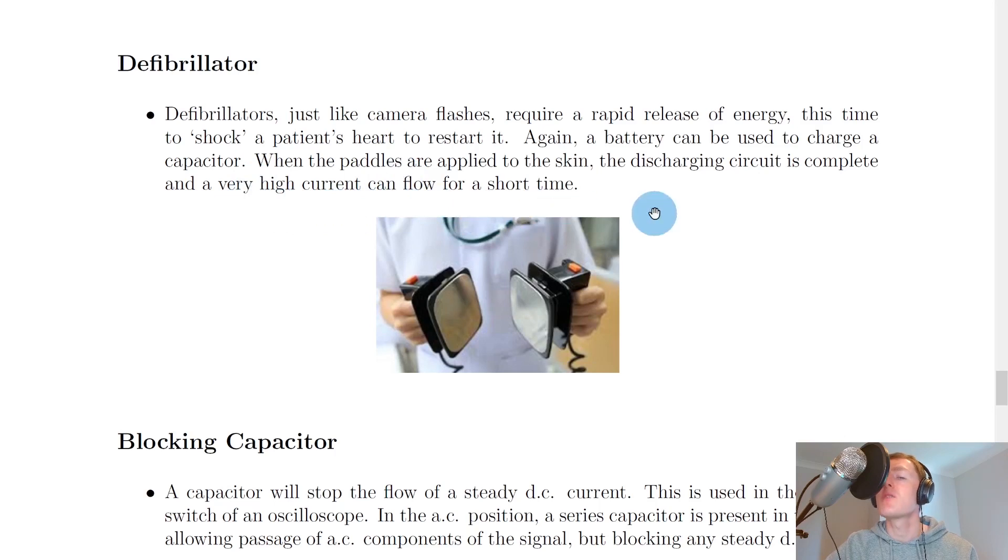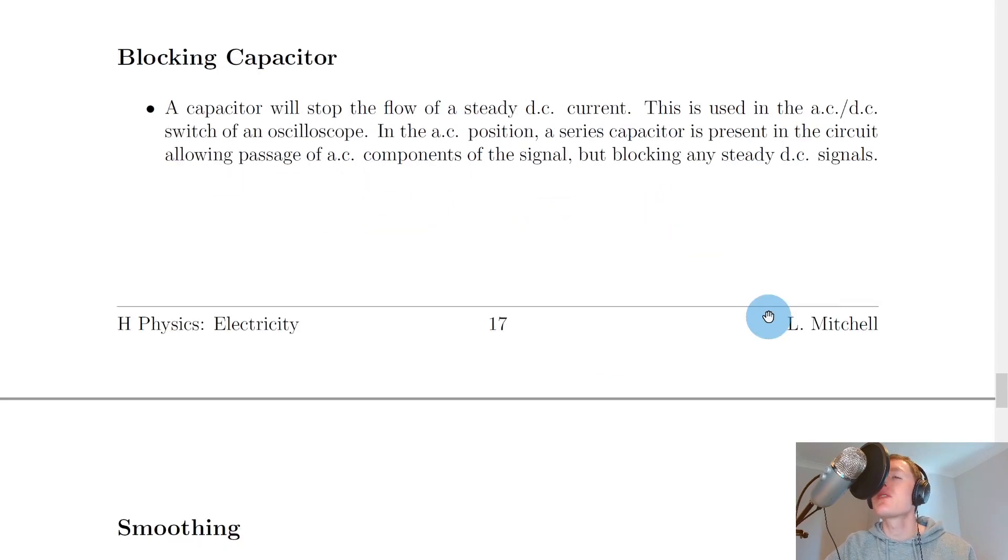Next we have something called a blocking capacitor. A capacitor will stop the flow of a steady DC current. This is used in the AC/DC switch of an oscilloscope. In the AC position, a series capacitor is present in the circuit, allowing passage of AC components of the signal but blocking any steady DC signals.